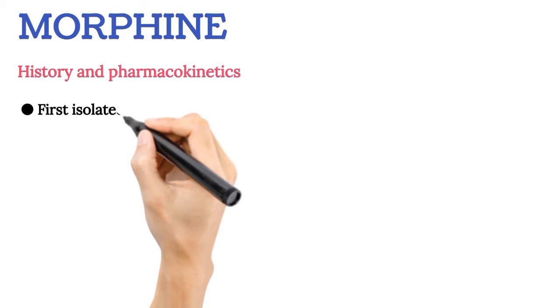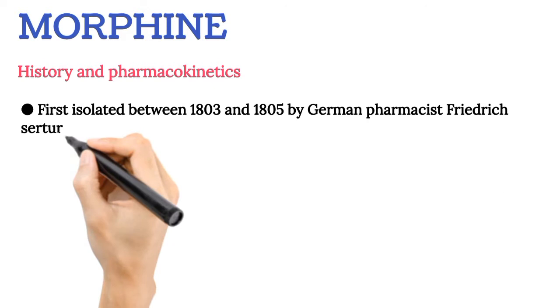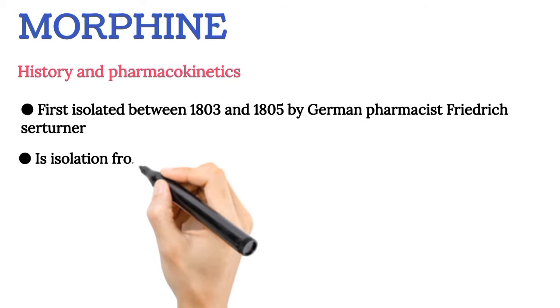Morphine — History and Pharmacokinetics. Morphine was first isolated between 1803 and 1805 by German pharmacist Friedrich Sertürner. The primary source of morphine is isolation from poppy straw of the opium poppy.